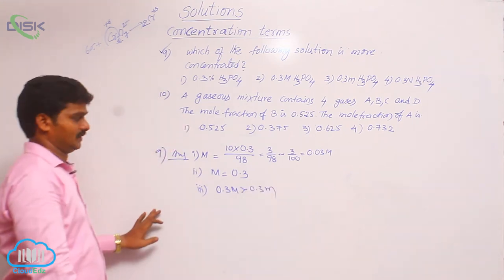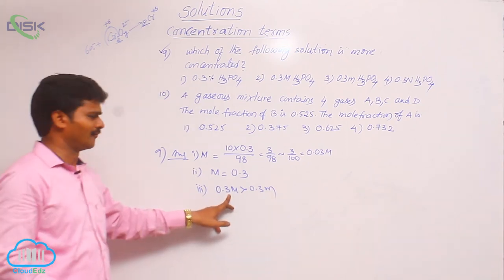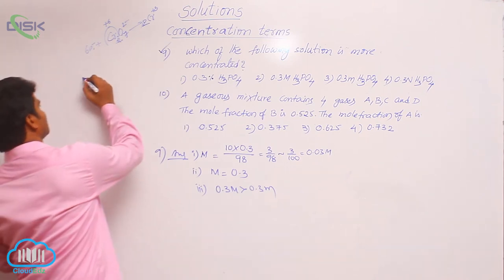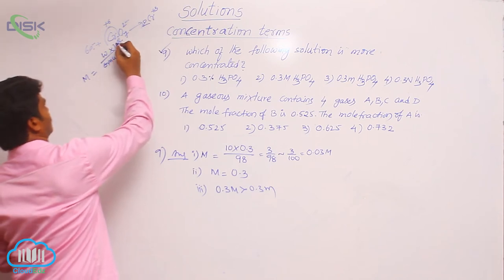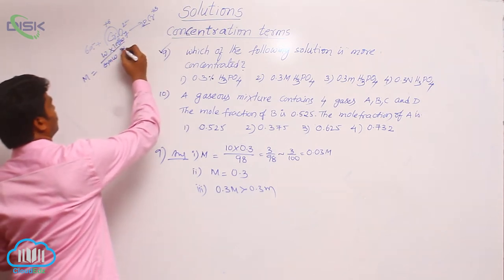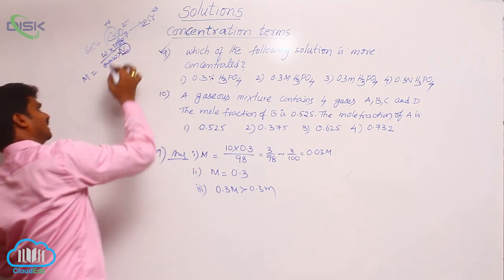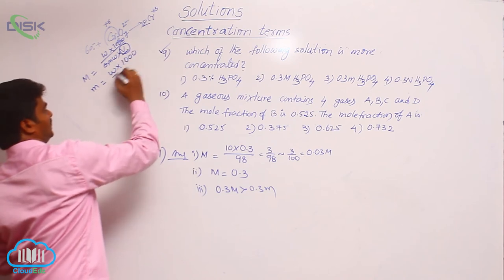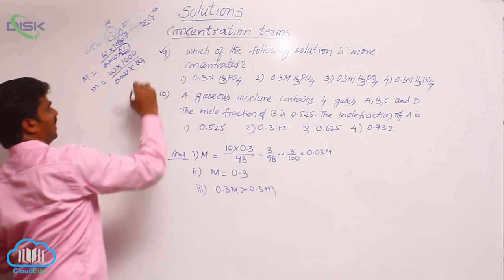If molality and molarity are given the same value, always molarity is more. Why is it more? In molarity, weight by gram molecular weight times 1000 by volume. In molality, weight by gram molecular weight times 1000 by weight of solvent.